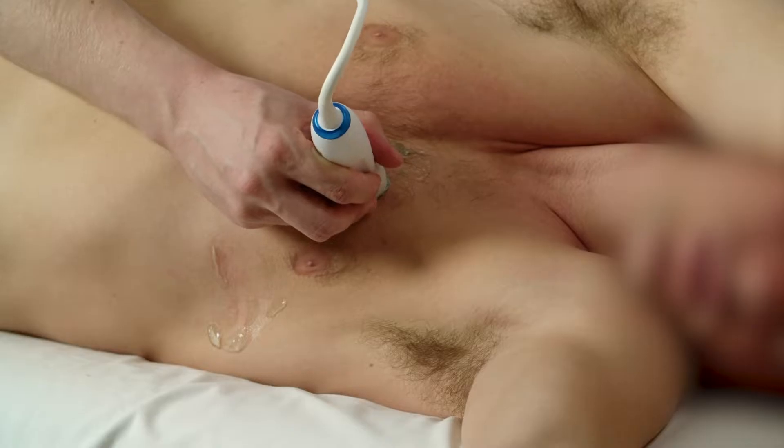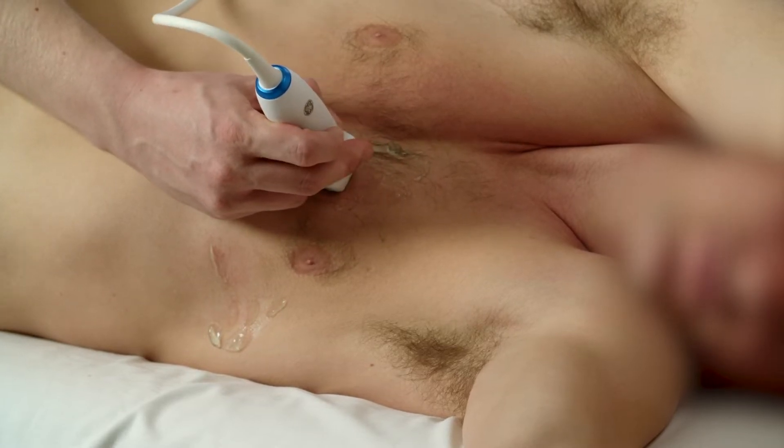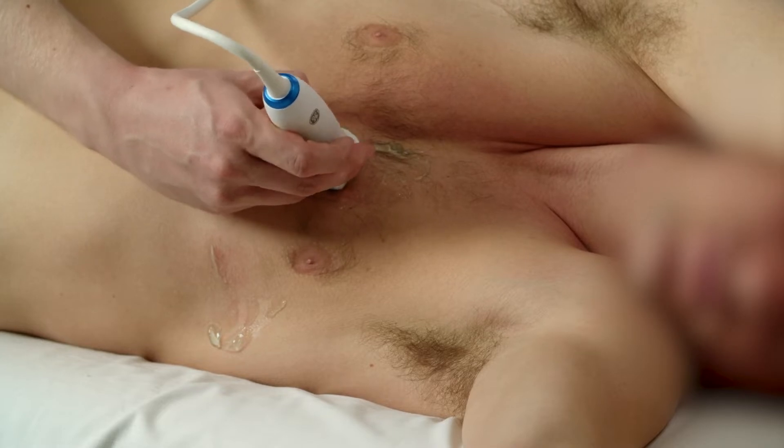You see immediately that it's the short axis. We take a look at this again on the transducer. So you have the marker to the right shoulder in the parasternal long axis view.